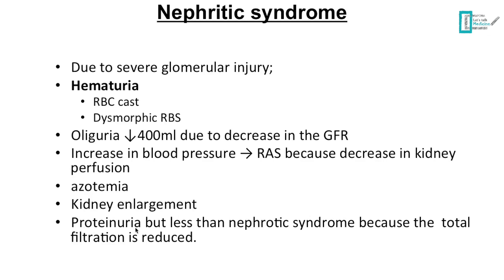Then we will have proteinuria — keep in mind that in nephritic syndrome proteinuria is less than in nephrotic syndrome. Why? Because total filtration of the kidney is reduced, so we will have more waste retained in the blood, also contributing to azotemia.